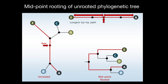So how does it work? Here you see that the lengths of the branches are different. Out of all lengths, we take such a path which would give us the longest tip-to-tip path. Let's say that the length of this branch is going to be five units, four units here, and three units here.